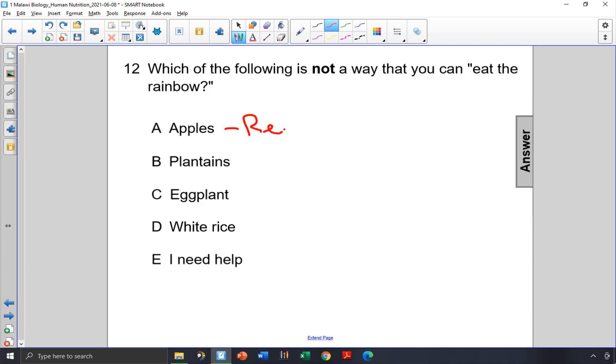These are fruits. They're red. They contain fiber. They contain some vitamins. So apples are good. This is part of eating the rainbow.